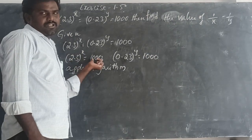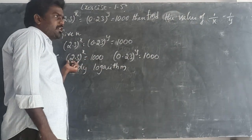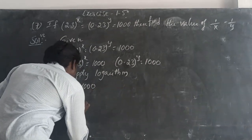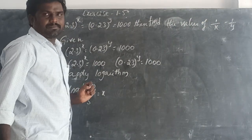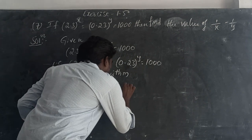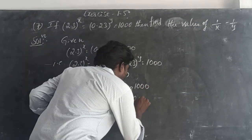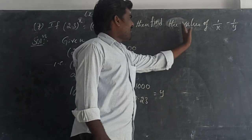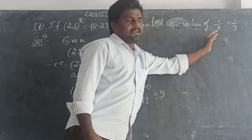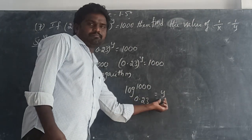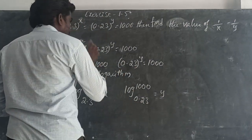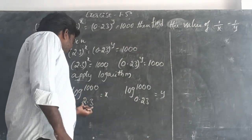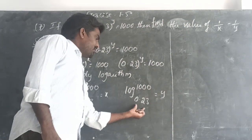Applying logarithm: log 1000 base 2.3 equals x, and log 1000 base 0.23 equals y. Now 2.3 has 1 decimal, so write as 23/10; and 0.23 has 2 decimals, write as 23/100. So 1/x equals log(23/10) base 1000, and 1/y equals log(23/100) base 1000.